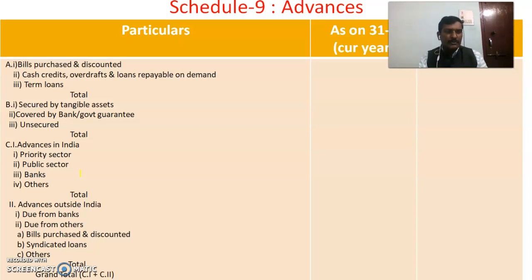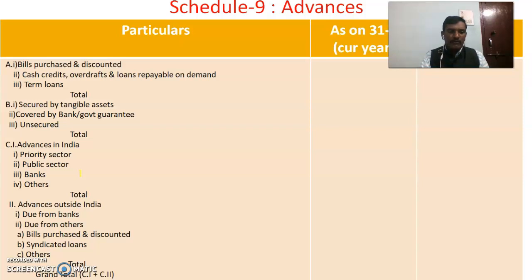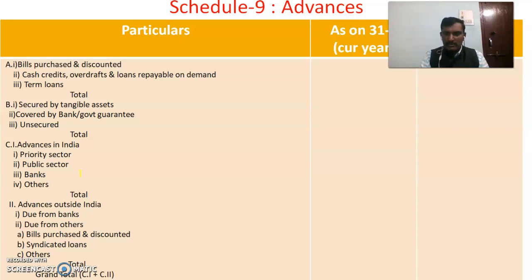Schedule 9 relates to Advances, which include bills purchased and discounted, cash credits, overdrafts and loans repayable on demand, and term loans. Advances are also classified as secured by tangible assets, covered by bank or government guarantee, and unsecured. Advances in India cover priority sector, public sector, banks, and others. Advances outside India include due from banks and due from others such as bills purchased and discounted, syndicated loans, and others. The grand total is taken to the balance sheet.